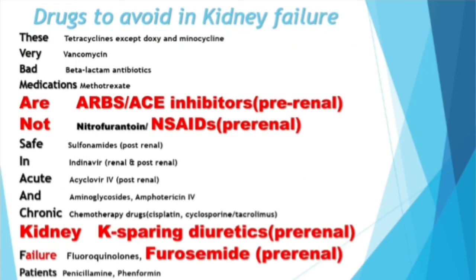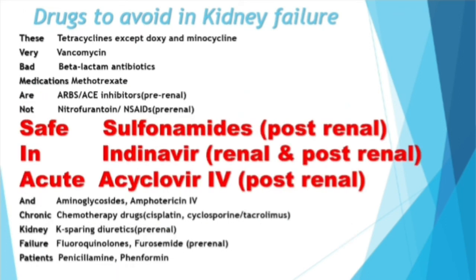Drugs that lead to pre-renal injury include those that decrease blood volume or renal blood supply: ARBs and ACE inhibitors along with NSAIDs decrease renal blood flow, while potassium-sparing diuretics and furosemide (a loop diuretic) decrease intravascular volume, leading to pre-renal failure. The three drugs that lead to post-renal failure are sulfonamide, indinavir, and acyclovir.